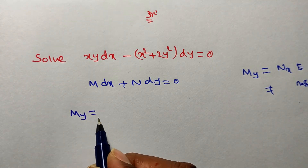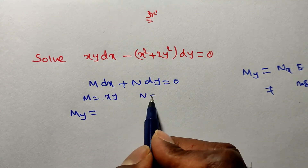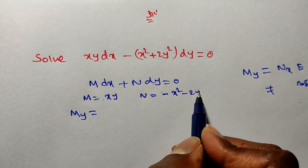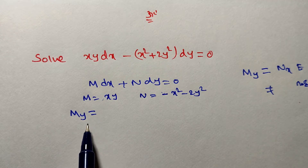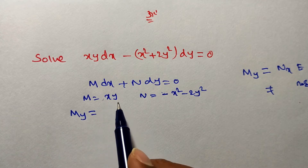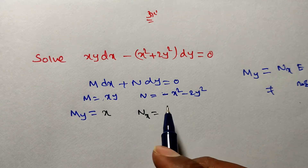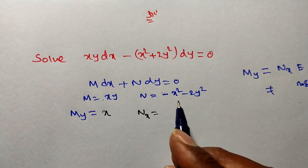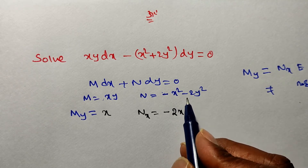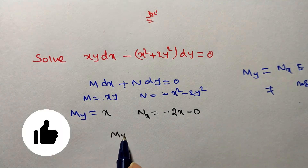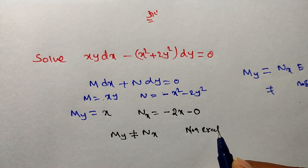Now I am finding ∂M/∂y. Here M is the coefficient of dx, which is xy. N is the coefficient of dy, which is minus x² minus 2y². Differentiating M partially with respect to y, we treat x as constant, so the derivative of xy with respect to y is x. Now for ∂N/∂x: differentiating N partially with respect to x, the derivative of x² is 2x, and 2y² is independent of x so its derivative is 0, giving ∂N/∂x = -2x. Since ∂M/∂y = x and ∂N/∂x = -2x are not equal, we can say it is a non-exact differential equation.